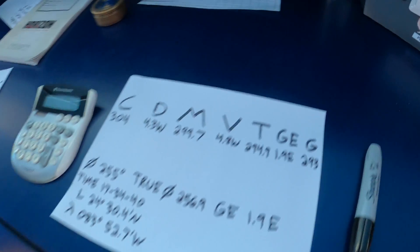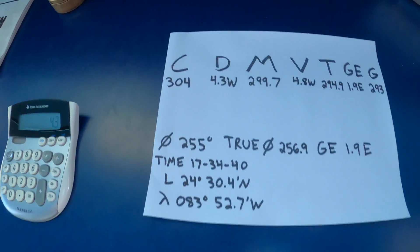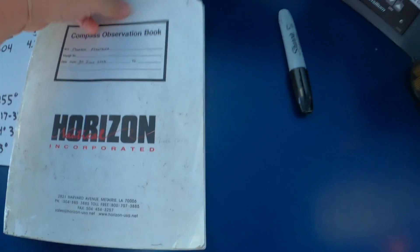So it just shows that we still use celestial navigation to verify compass headings and gyro error. And this will all get transcribed into the compass observation book.